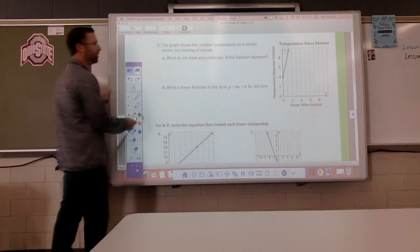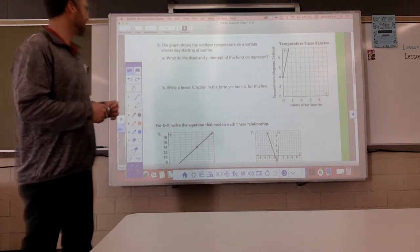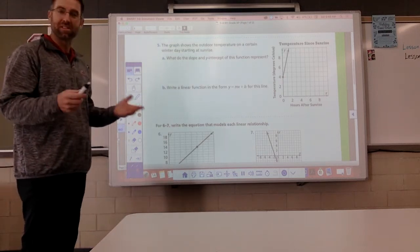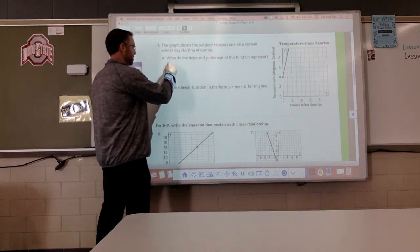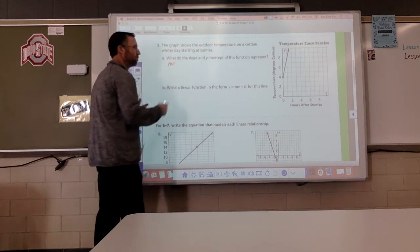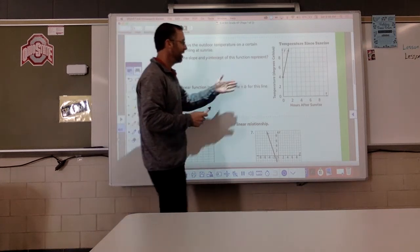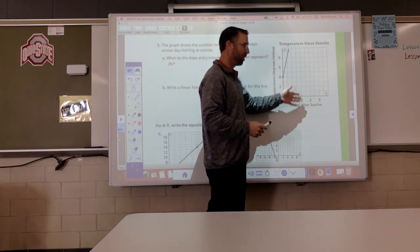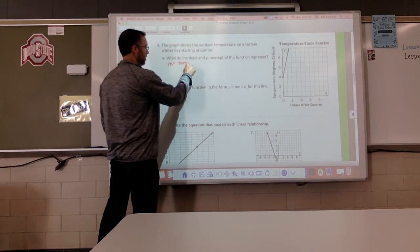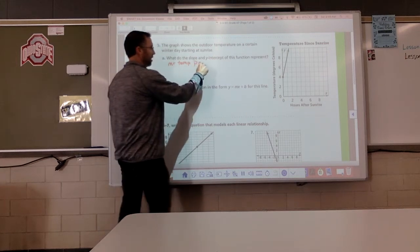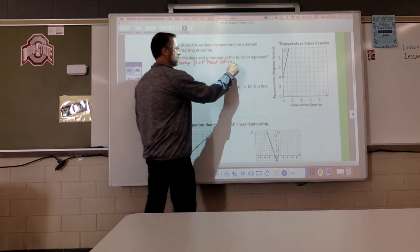Now, number 5. Yes, the graph shows the outdoor temperature on a certain winter day starting at sunrise. What do the slope and y-intercept of this function represent? Well, the slope, what does it represent? Well, it is the temperature per hour after sunrise.